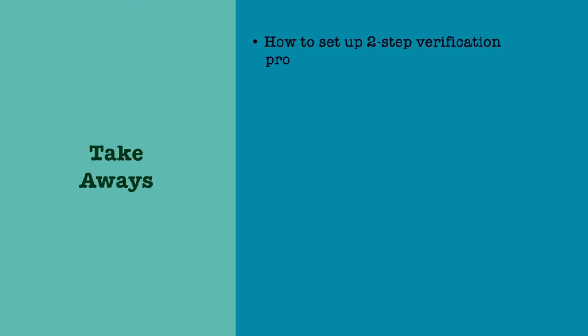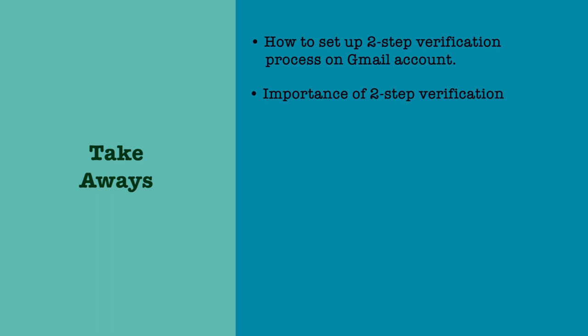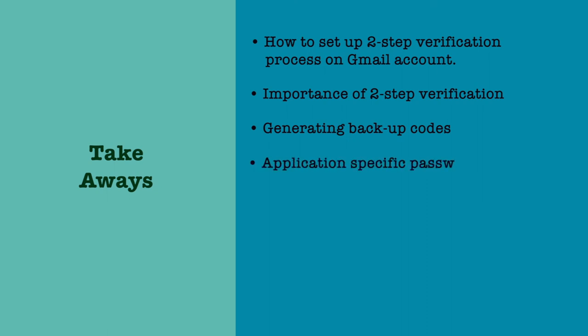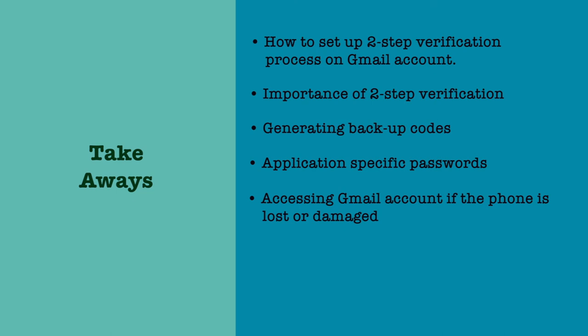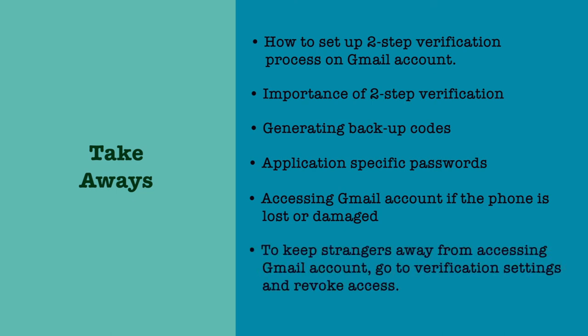With this, we have learned how to set up the two-step verification process on Google accounts, the importance of having two-step verification, how to generate backup codes when you don't have access to your phone, and how to use application-specific passwords on smartphones. We also saw how to access your Gmail account if you've lost or damaged your phone, and how to revoke access from all devices and apps on your verification settings page. Happy browsing — please enable your two-factor authentication. Thank you.